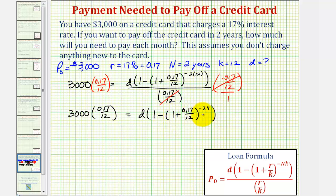And now to solve for D, we'll divide both sides by this quantity here. So we'll divide both sides by one minus the quantity one plus 0.17 divided by 12, raised to the power of negative 24. Notice on the right side, this simplifies to one. So we have D equals this quotient here, which we'll round to the nearest cent.